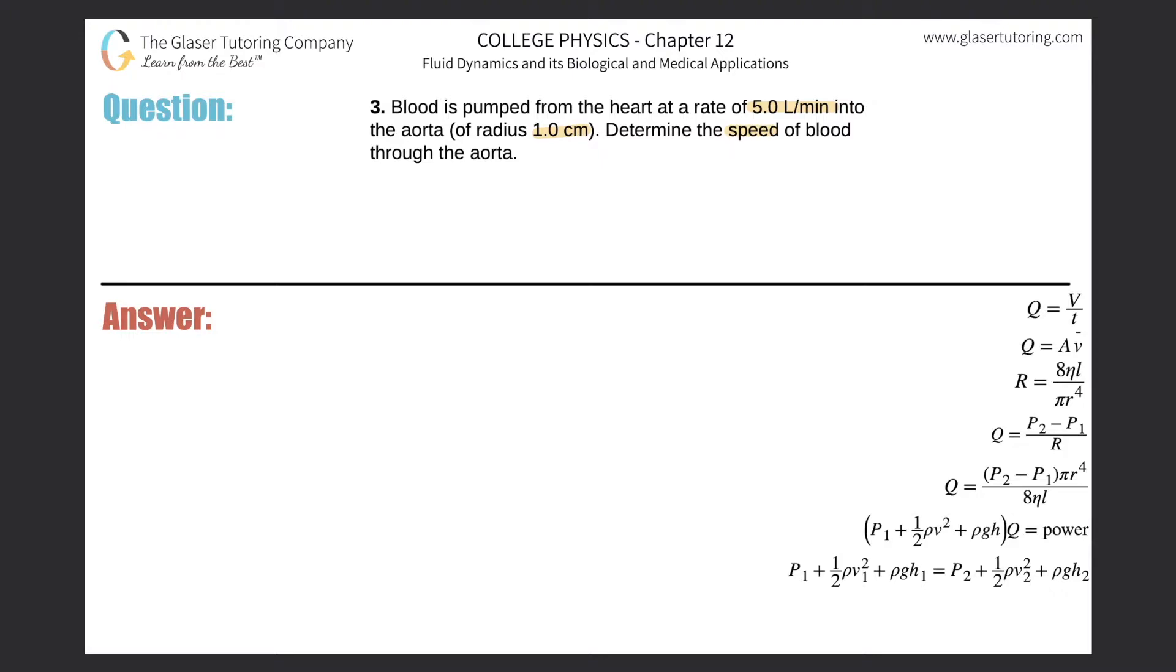Take a look at the formulas on the right-hand side. Velocity is right here. This tells us that Q, which is known as the volume flow rate, is equal to the cross-sectional area of the tube that the fluid